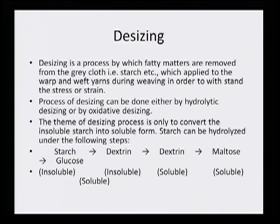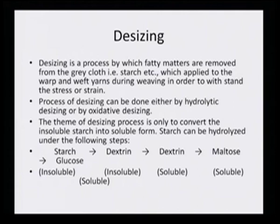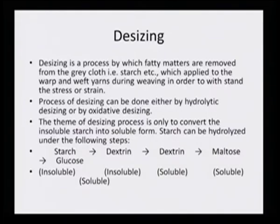Desizing is a process by which fatty matters are removed from the grey cloth, such as starch, which is applied to the warp and weft yarn during weaving in order to withstand stress or strain. Cotton is very tender, so starch has to be added during weaving. If starch is not added, the yarn would break during the process of weaving. Starch is particularly added to facilitate weaving.